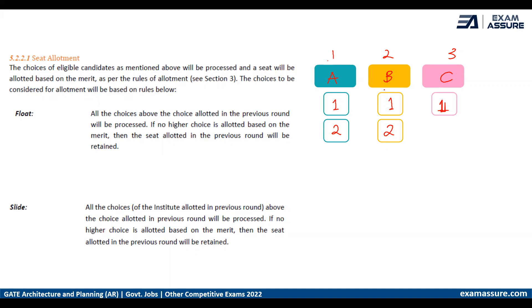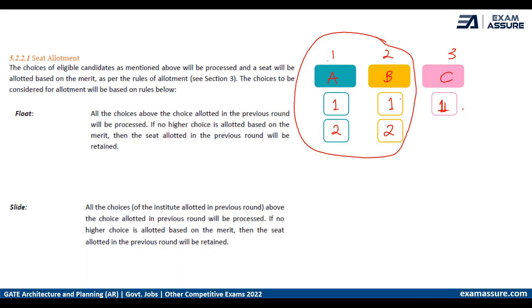This will be carried forward to the second round. In the second round, the processing for your seat will take place among the institutes of higher priority for you — institutes A and B. If that does not work out in the second round, your seat from the first round in institute C will still remain with you.